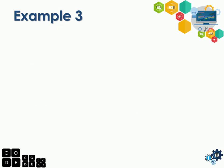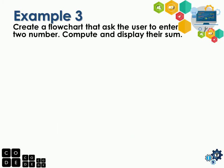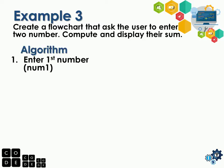Example number 3: create a flowchart that asks the user to enter 2 numbers, compute and display their sum. Here we ask the user to enter 2 numbers — the word 'enter' means input. For the algorithm: step 1, enter the first number; step 2, enter the second number. The first number will be named num1, and the second number will be named num2.